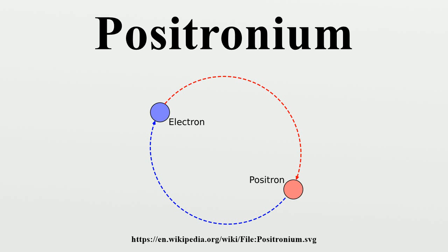Thus, for positronium, its reduced mass only differs from the electron by a factor of two. This causes the energy levels to also roughly be half of what they are for the hydrogen atom. So finally, the energy levels of positronium are given by: the lowest energy level of positronium is minus 6.8 eV. The next level is minus 1.7 eV. The negative sign implies a bound state.